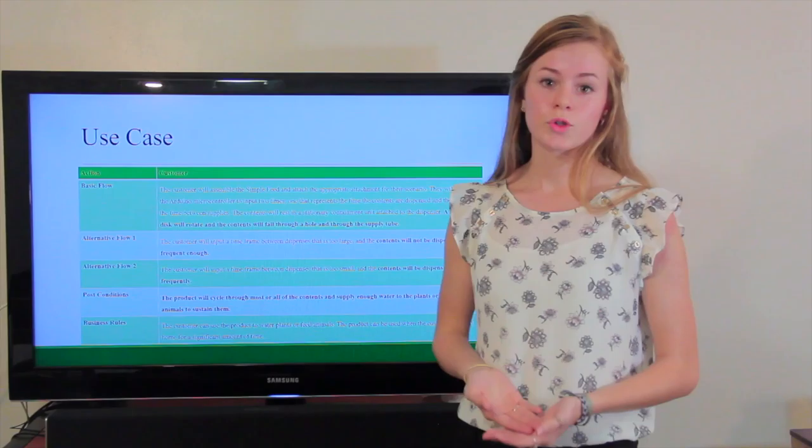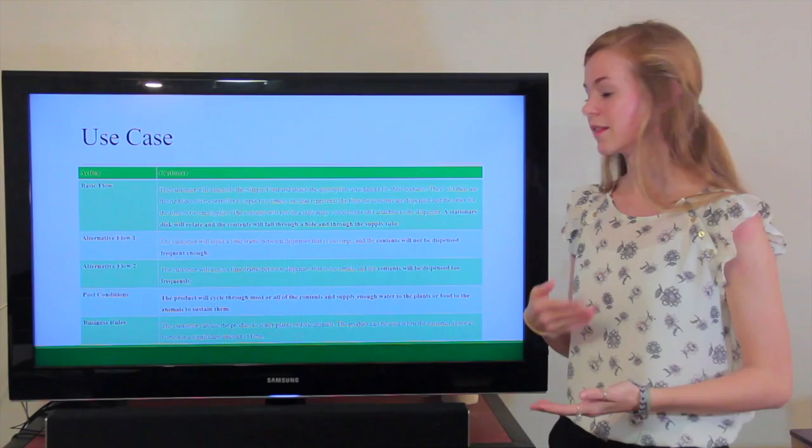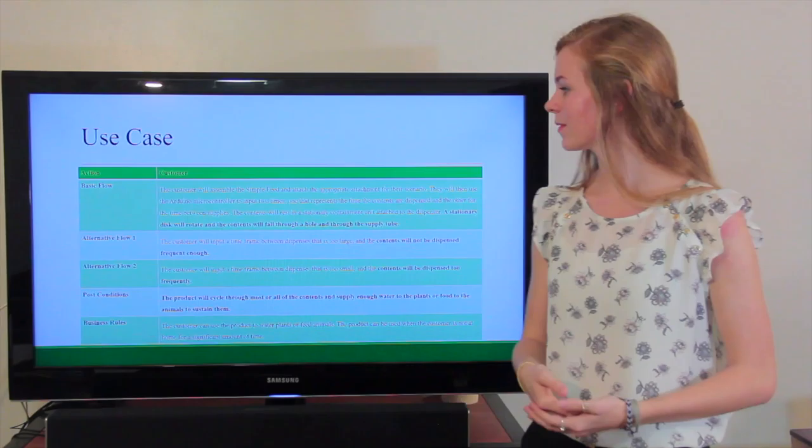The alternate flows would be if the customer inputted a time that was too large or too small, so that would be dispensing materials either too frequently or not frequent enough. When you're dealing with living objects, animals, plants, that can be pretty detrimental if you have too much or too little of the material.